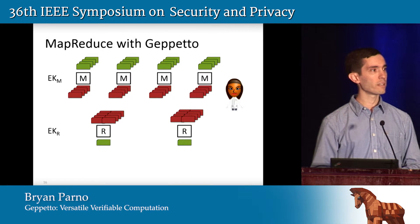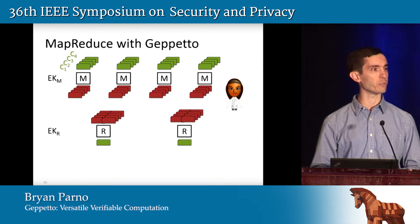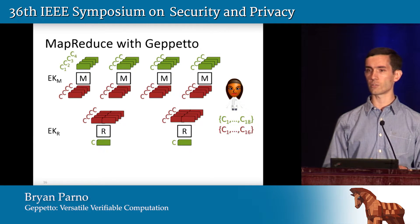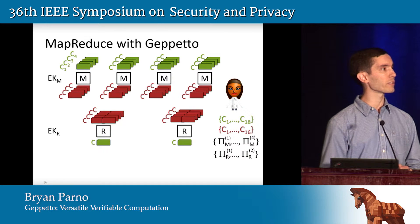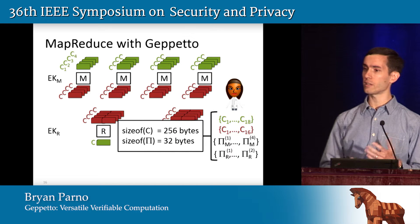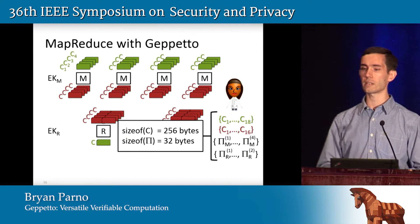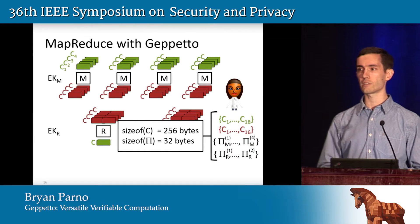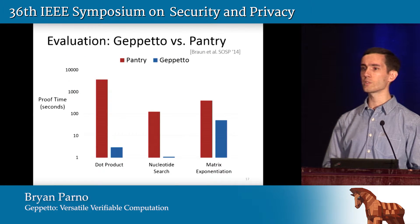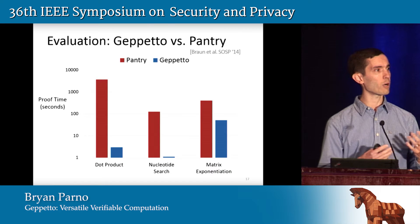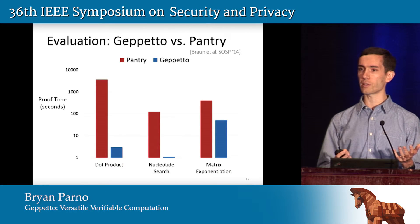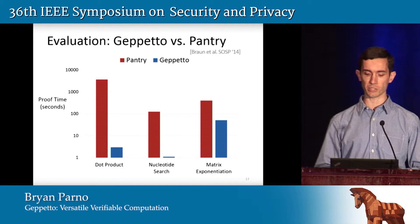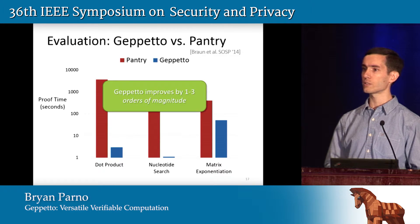Going back to our MapReduce example: instead of sending all this data back to the client, the client can specify all inputs based on commitments she pre-computes. The worker, as he produces intermediate state, can produce commitments to those values — that's all we send back. She gets a small collection of commitments and a set of proofs showing those commitments were used properly. The commitments are constant size — only 256 bytes regardless of how big the data is — and proof size is constant regardless of computation complexity. Comparing against Pantry from last year's SOSP, which handled stateful MapReduce via verified hashing at the application layer, Geppetto improves by one to three orders of magnitude on proof generation time.